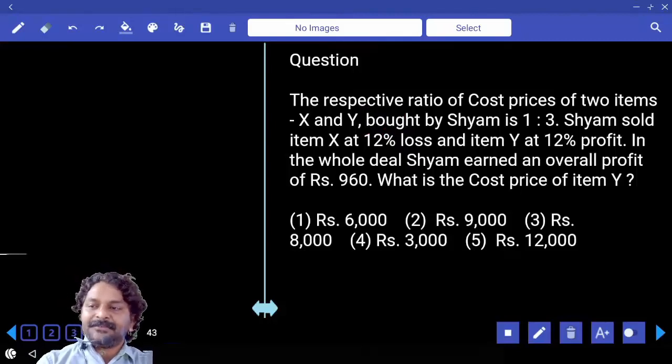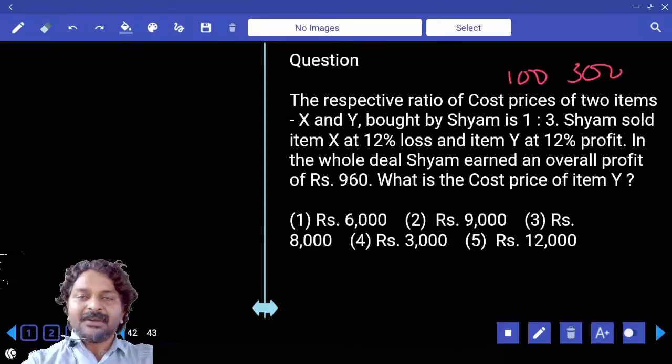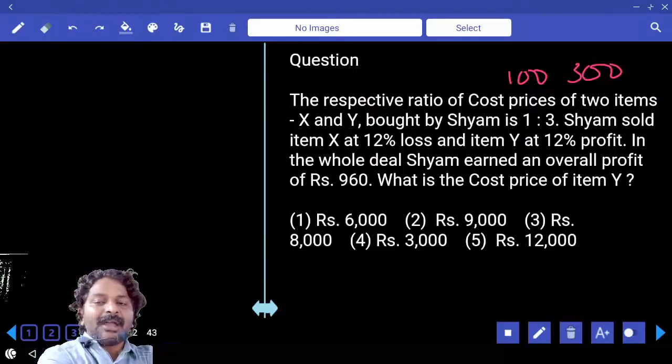The respective ratio of cost price of two items X and Y bought by Sham is 1:3. So let's treat it as 100 and 300. Sham sold item X at 12% loss.